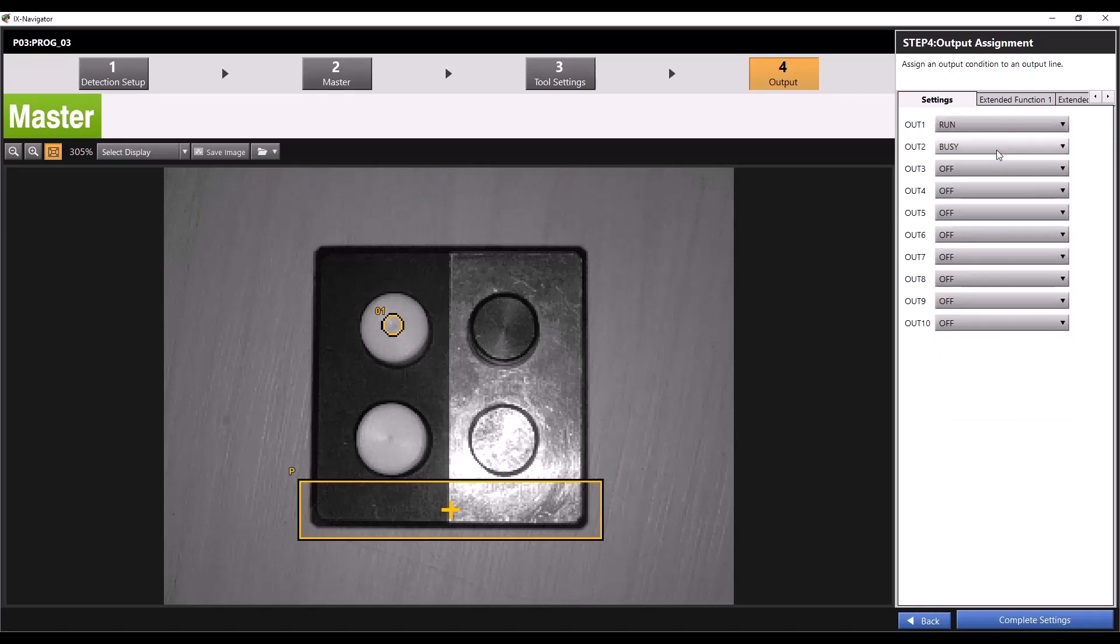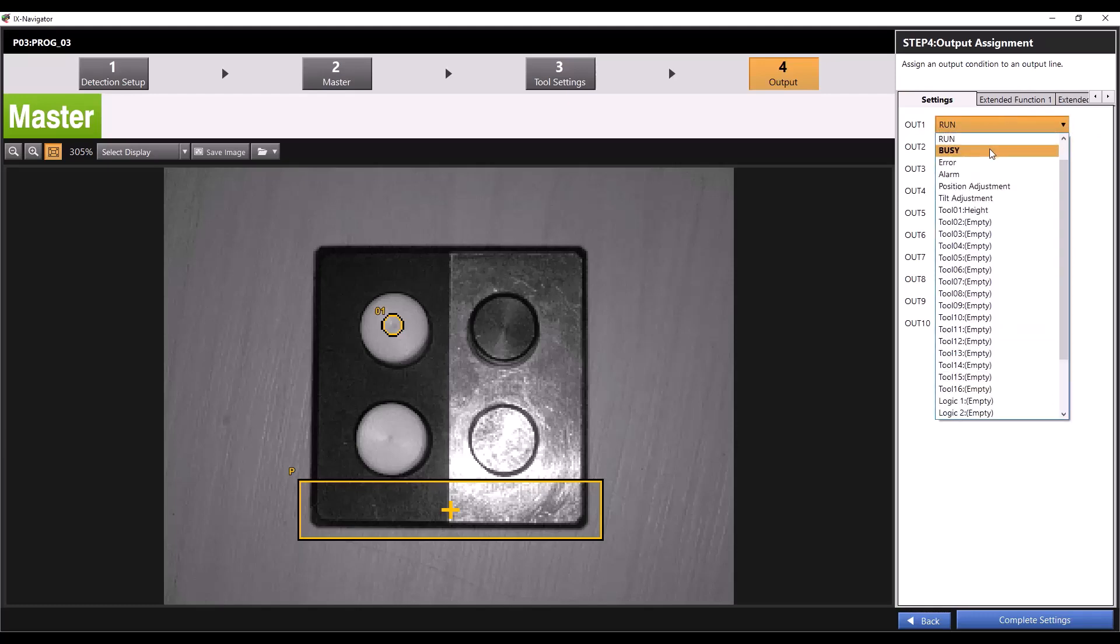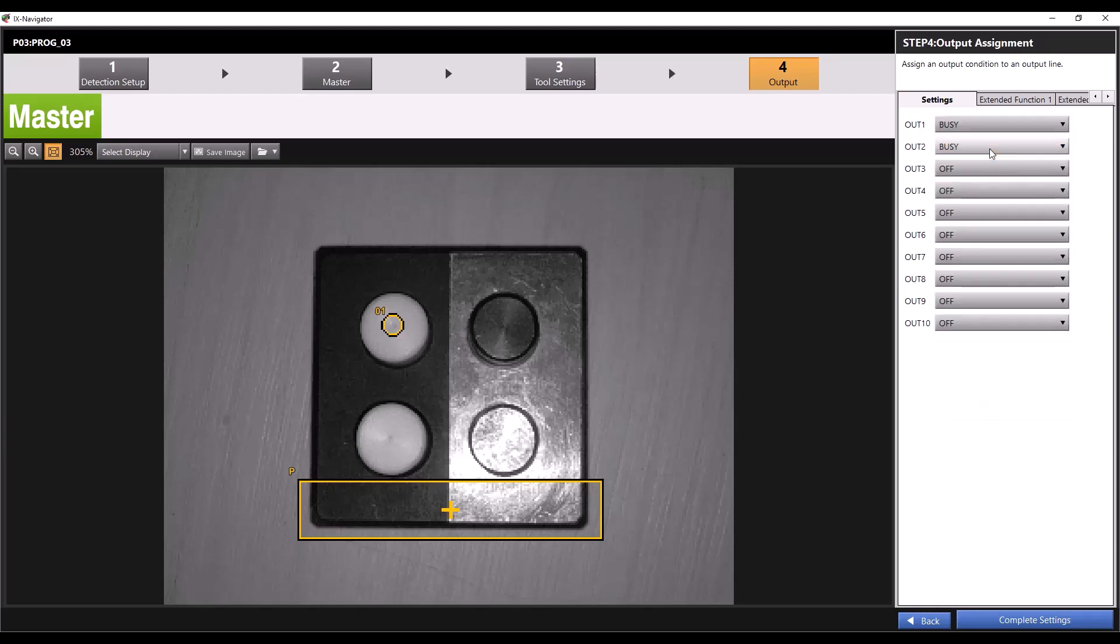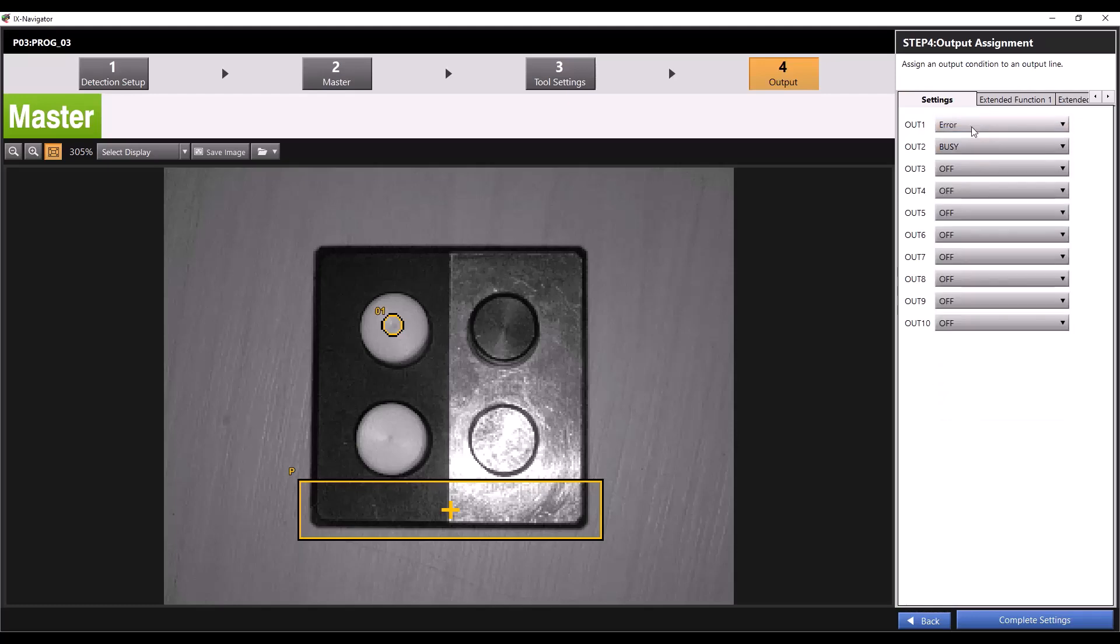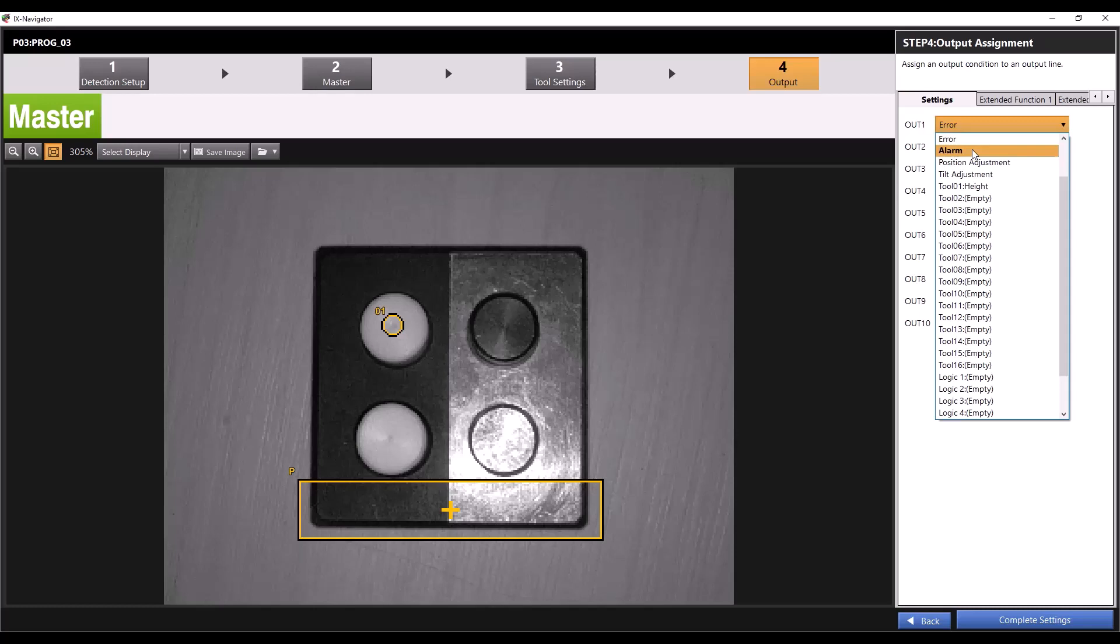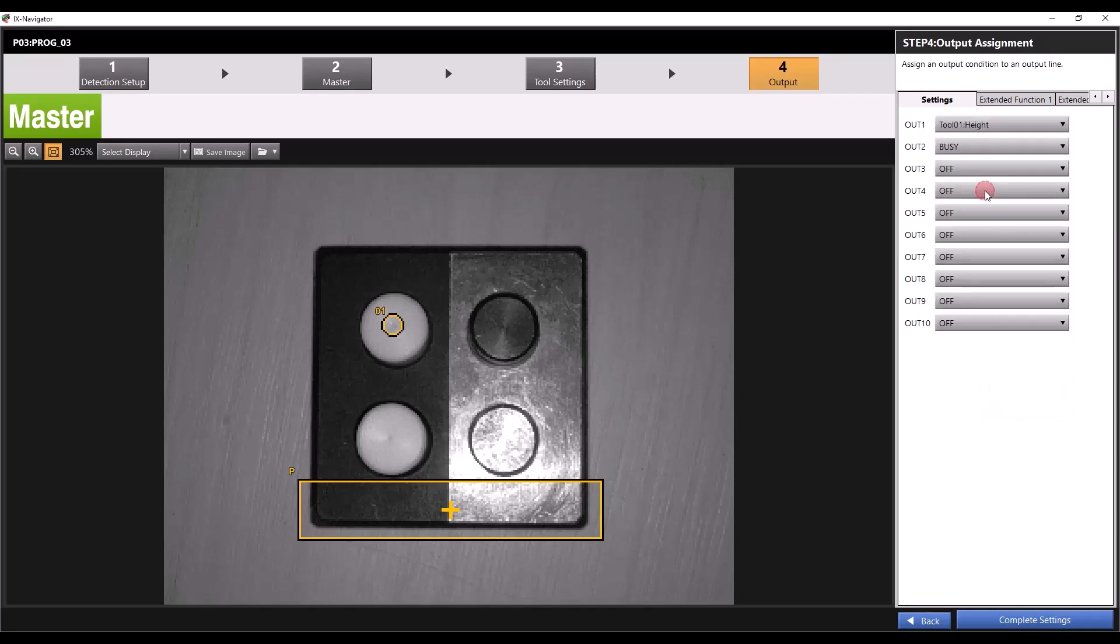Selecting total status will turn the output on when the judgment is either OK or NG, depending on which you choose. Selecting the run output will turn the output on when the camera is in run mode. Selecting busy will turn the output on when the iX is busy or in the middle of processing. Error will output a signal when the sensor is in an error state. Alarm will output a signal when the sensor gets an alarm reading. The other options are all tools or logic, which will turn on the output when a specified tool or logic condition is OK or NG. For example, I can change my output 1 to tool 1. Now it will only turn on if tool 1 determines an OK judgment.